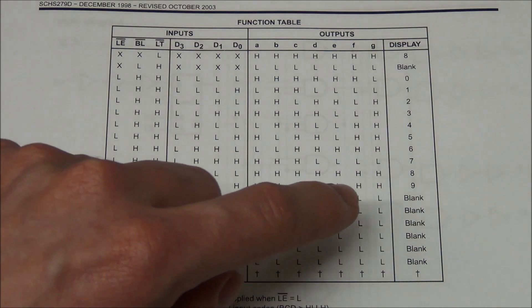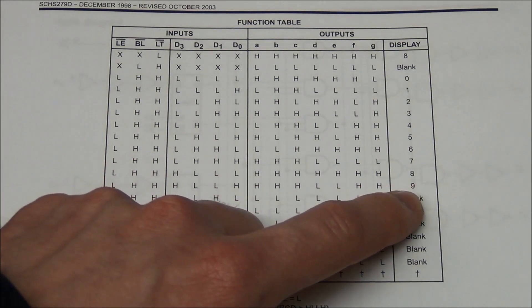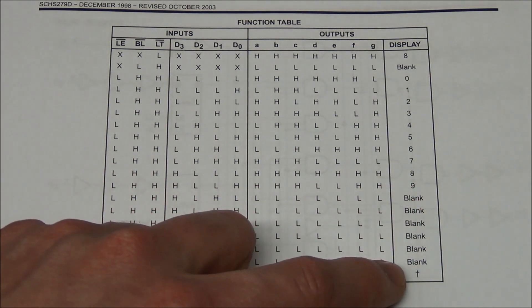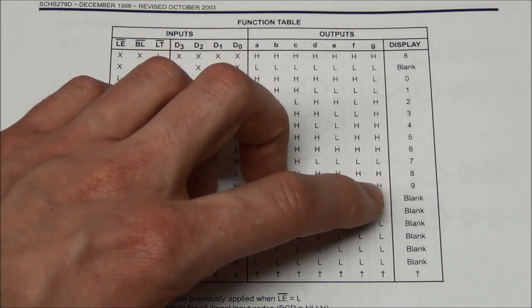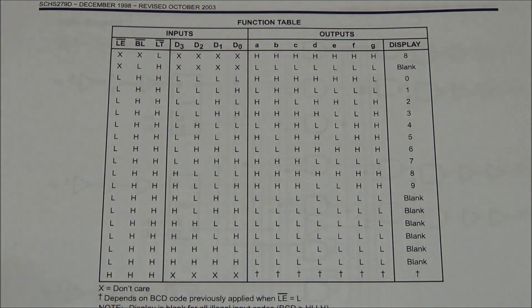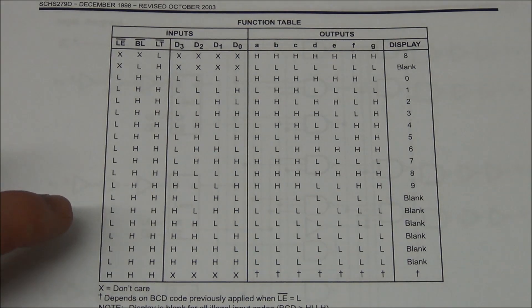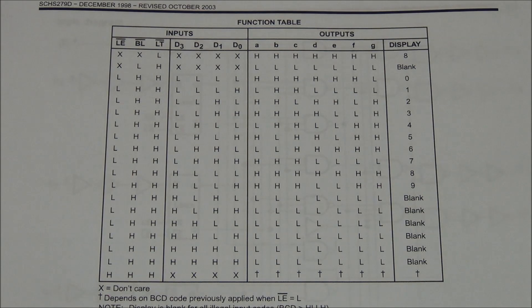So one disadvantage with this chip is once you go above 9, it will just blank the displays. It could have been nice if it could do like A, C, E, F, and so on. There's other chips that can do that, but unfortunately this one can't.